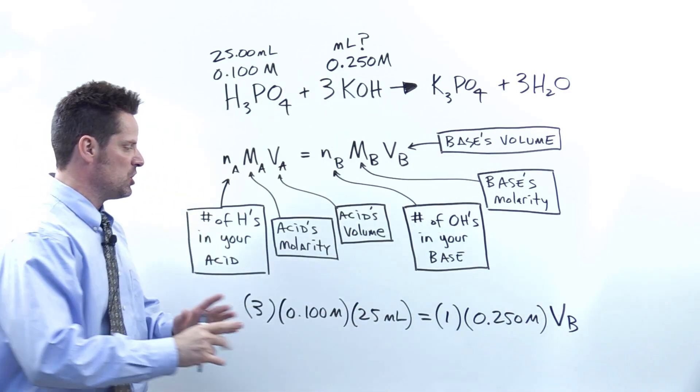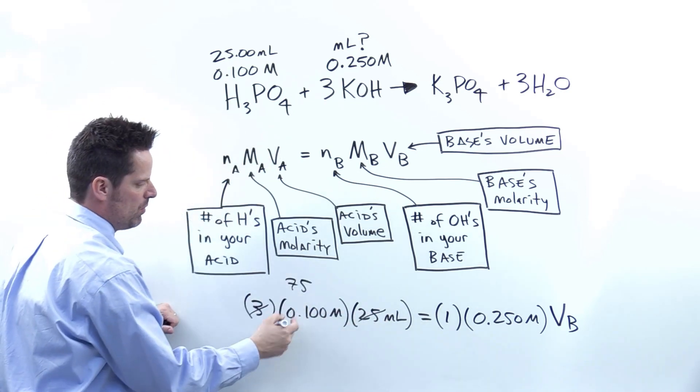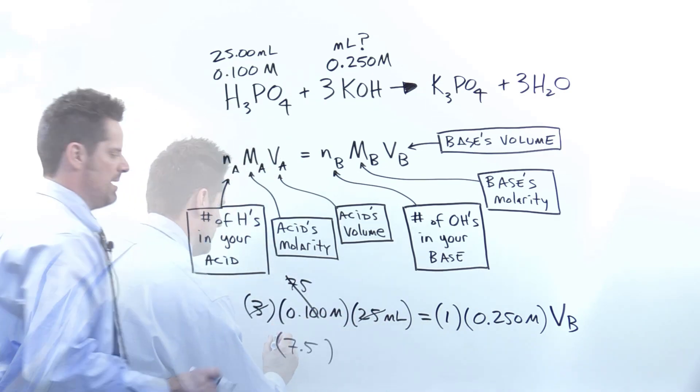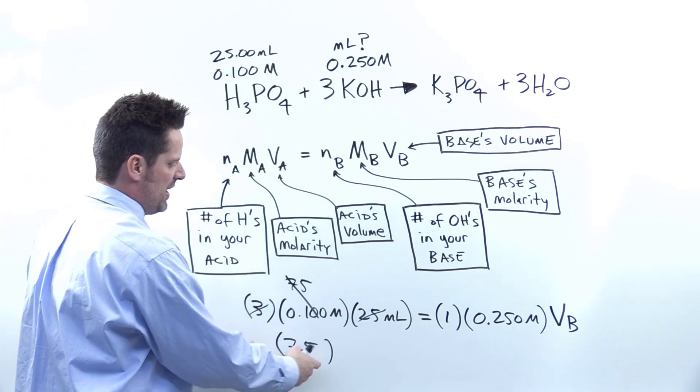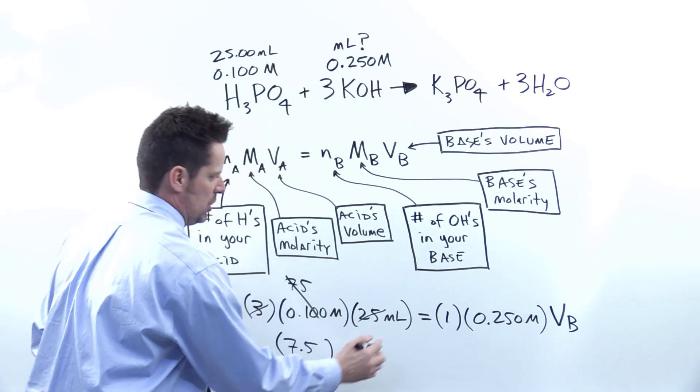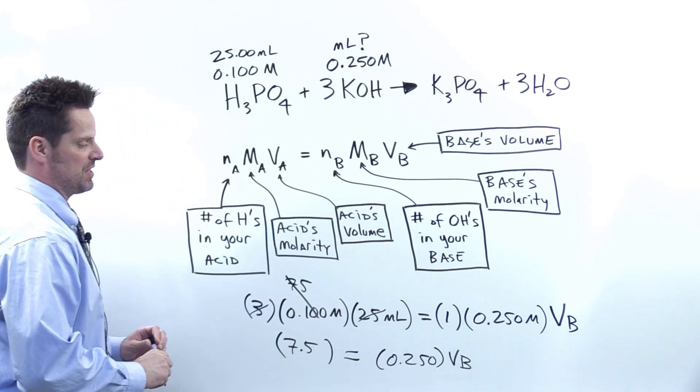From here on then, I just do algebra. 25 times 3 is equal to 75, and 75 times 0.1 is equal to 7.5. And I'm leaving the units off for clarity or simplicity. So I get 7.5 on the left being equal to 1 multiplied by 0.250, which is simply 0.250 multiplied by my Vb.